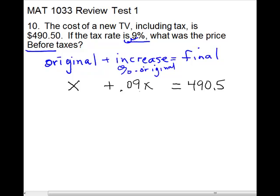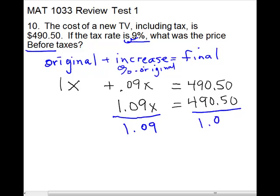Now you have a regular linear equation. You're going to put your like terms together. You have to remember that your coefficient of X is a 1. So you have 1 plus 0.09 is 1.09X equals 490.50. And then we're ready to solve. So we're going to divide on both sides by 1.09. And that will give us X. Make sure you punch it in top to bottom. And that will give us $450.